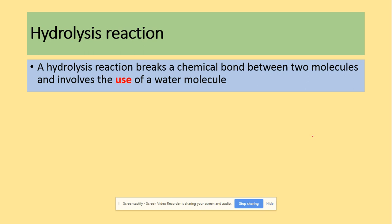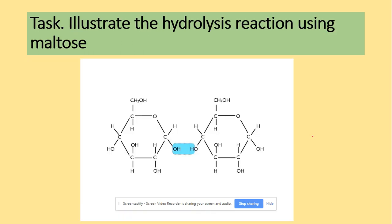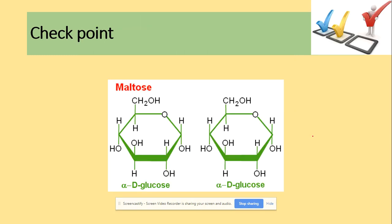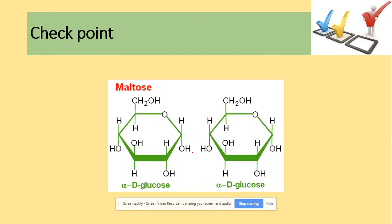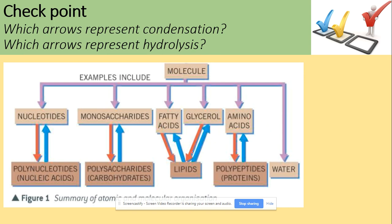Hydrolysis is a reaction that breaks the chemical bond between two molecules and involves the use of a water molecule — water is added. For example, maltose is made of two glucose units, and to hydrolyse maltose into two glucoses, we add a water molecule. There's a quick checkpoint here: stop the video and think about which arrow shows the condensation reaction and which shows the hydrolysis reaction.